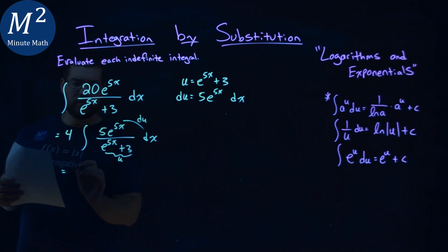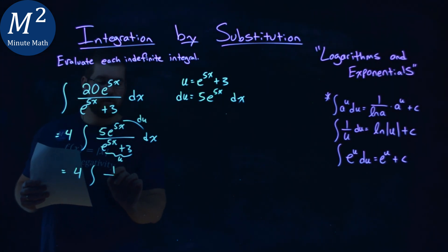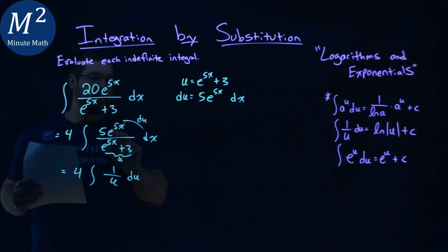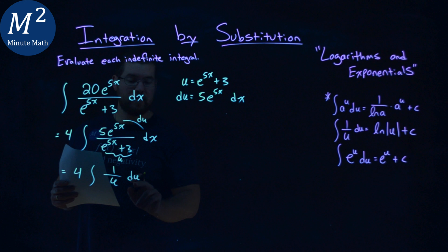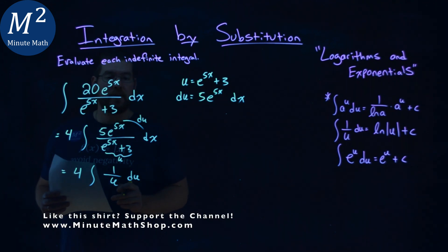And so now we can rewrite this in terms of u. 4 times the integral here of 1 over u du, right? 5e to the 5x power dx is my du, and then u is just there in the denominator.